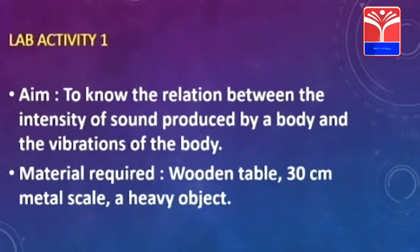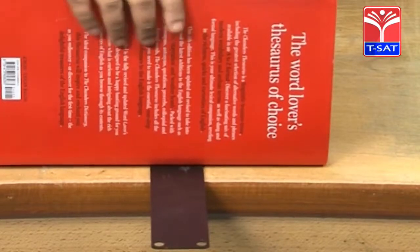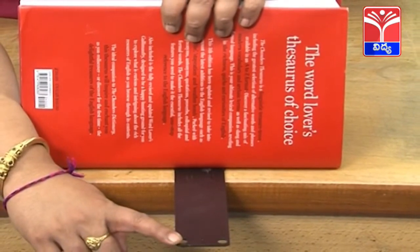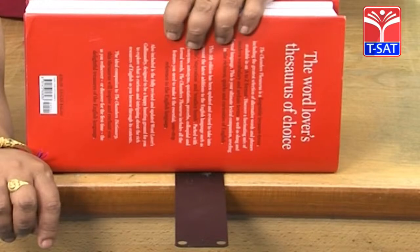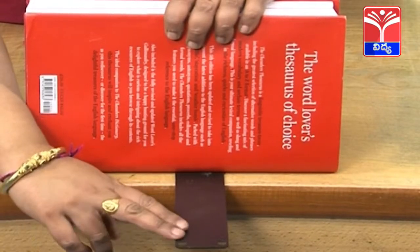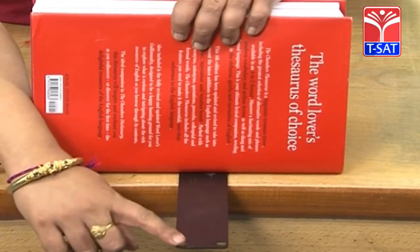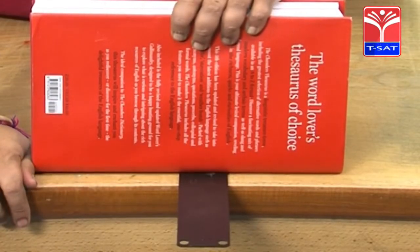Let us see this activity. We will do the lab activity to understand the relation between the intensity of sound produced and the vibrations in the body. Let us put the blade on the table with a heavy support and apply a small force. Observe the sound, children. Now I am applying more force. When I am applying more force, the number of vibrations are more and the sound produced is also larger.